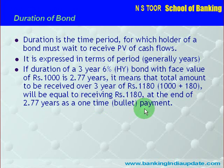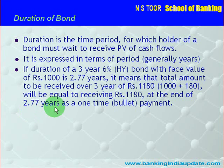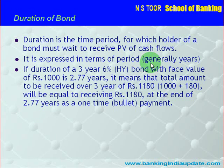So instead of receiving this payment in installments over 3 years, if this amount is received as a bullet payment, it will be equal to that amount if received in 2.77 years. Duration is the time period which a holder has to wait to receive present value of cash flows, and it is always expressed in terms of number of years.